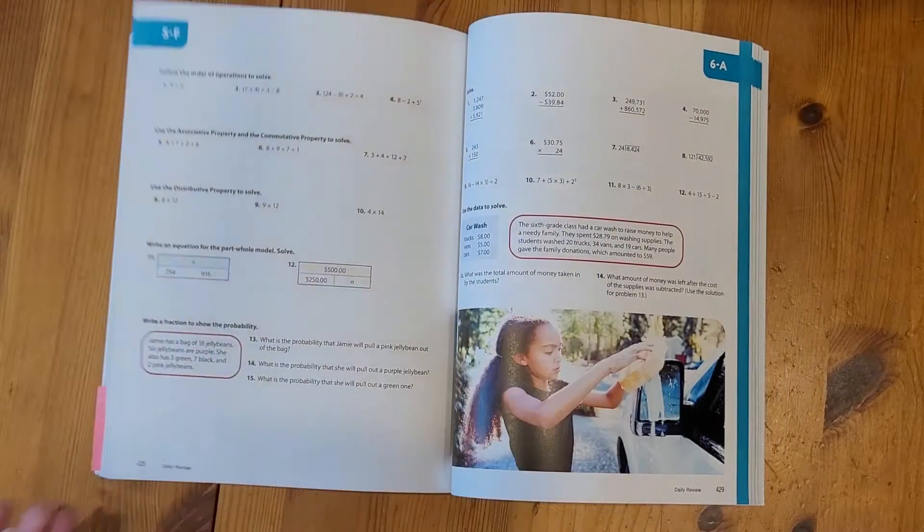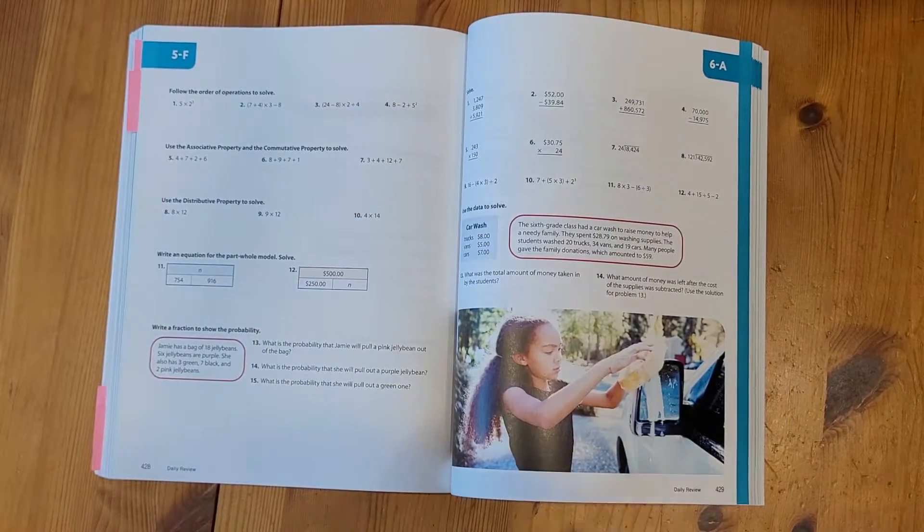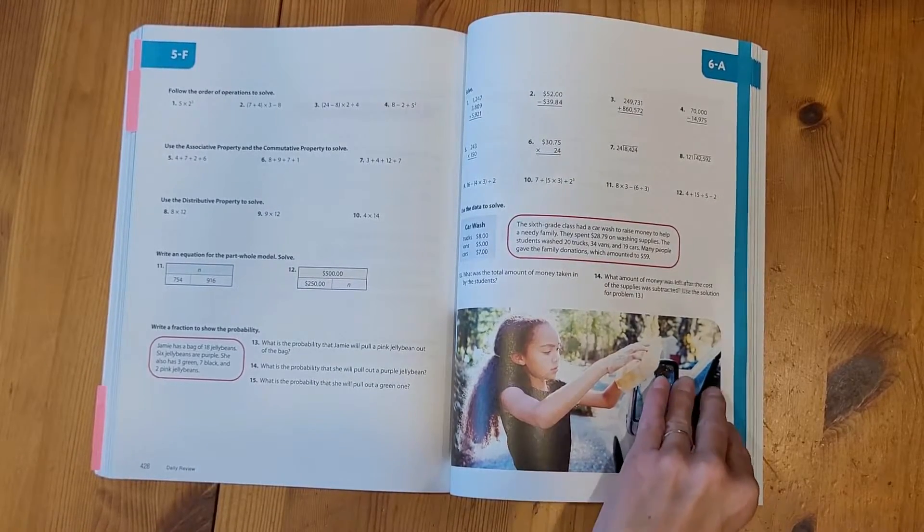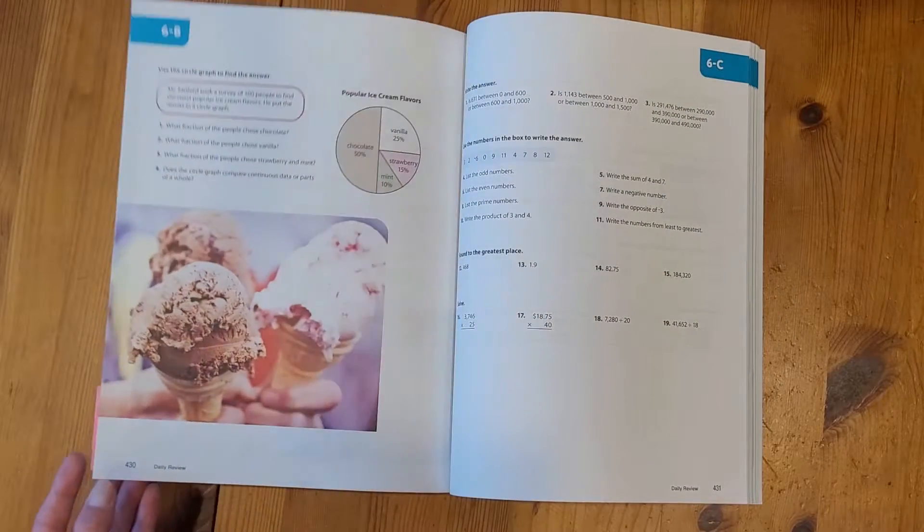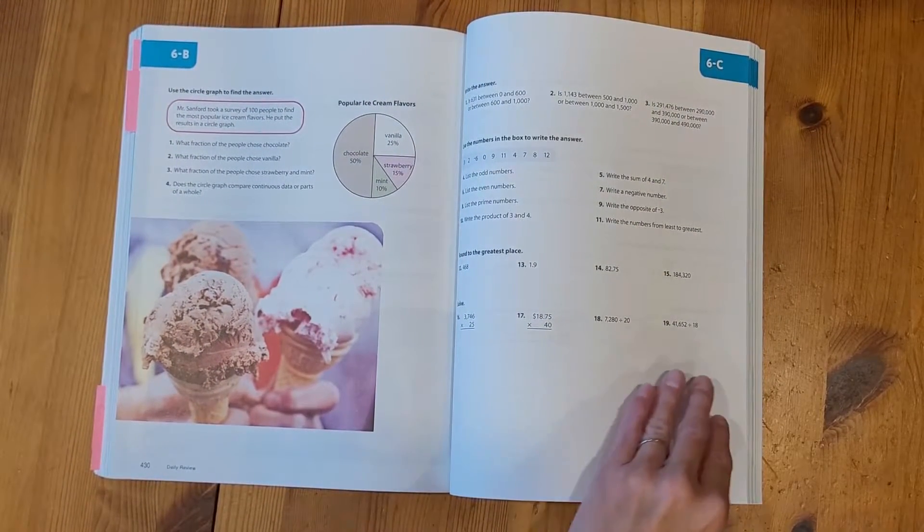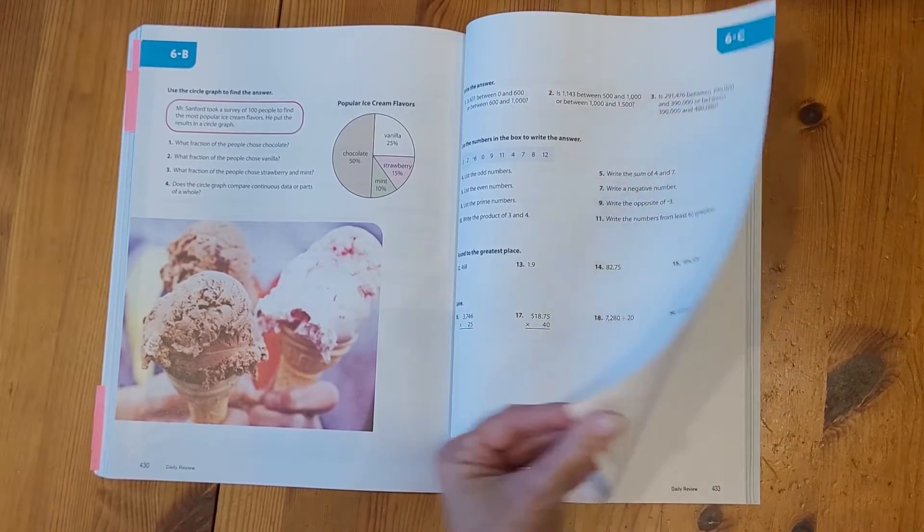Again, you're already doing 50 questions, or half that, or however many you choose with your child in the actual lesson for the day. So if you felt like it was too much with the daily review, you are welcome to modify to fit your family's needs.